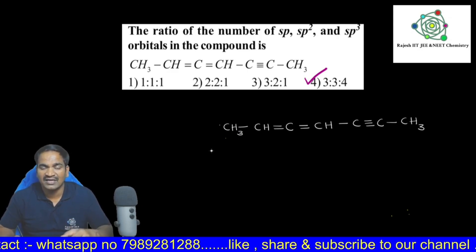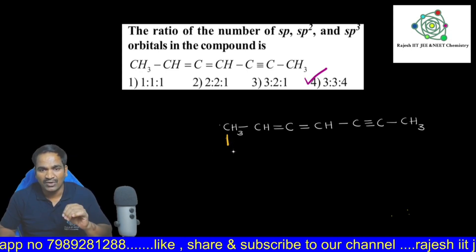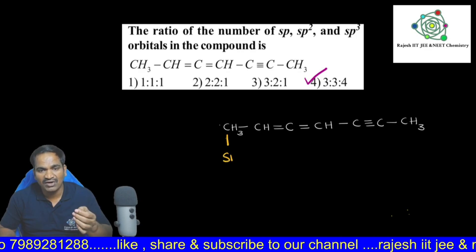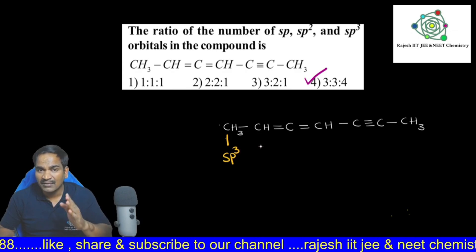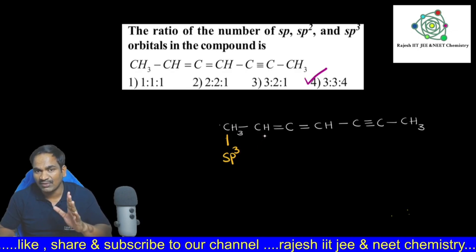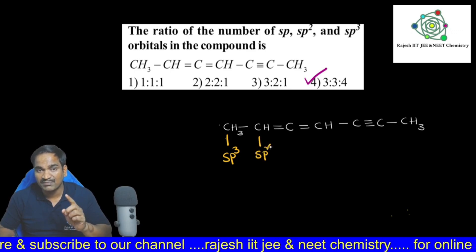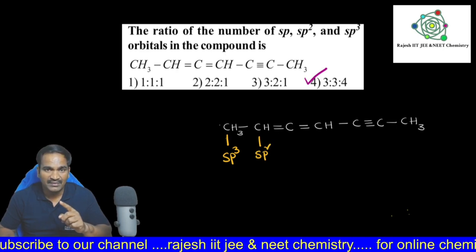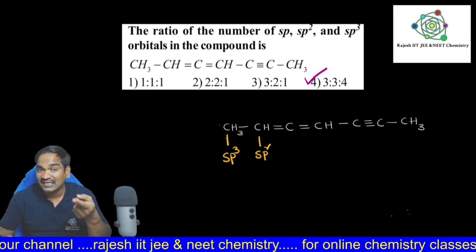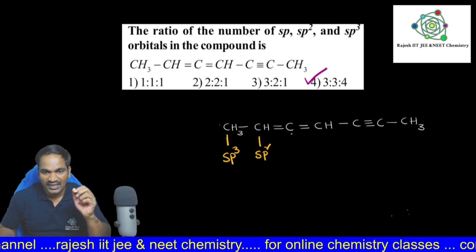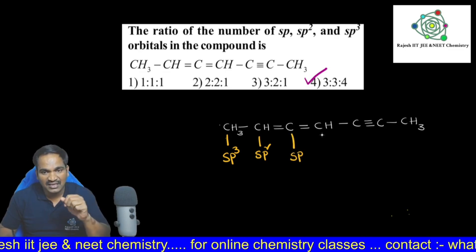First, see this carbon — it is having four single bonds, all are single bonds, so it is involving in sp3 hybridization. Coming to the second carbon, it is attached with one double bond, so it undergoes sp2 hybridization. Next, very important: if that carbon is attached with two double bonds or one triple bond, it undergoes sp hybridization — you see this here, it is sp hybridization.